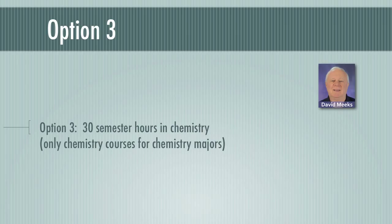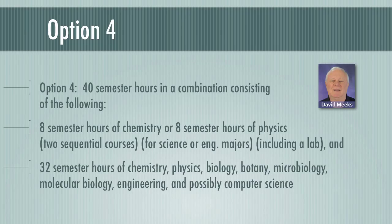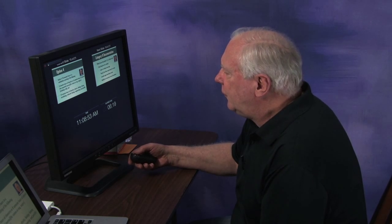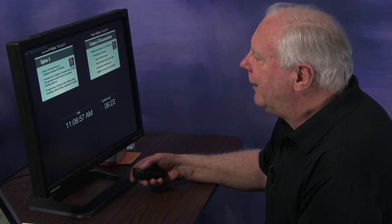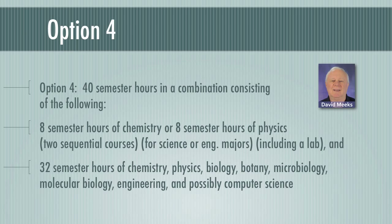Option three is 30 semester hours in chemistry — only chemistry courses for chemistry majors qualify. Option four is the broadest category, requiring 40 semester hours: eight semester hours of chemistry or physics (two sequential courses for science or engineering majors, including a lab), plus 32 semester hours across chemistry, physics, biology, botany, microbiology, molecular biology, engineering, and possibly computer science.